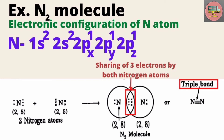Now let's see why the N₂ molecule has a triple bond. The electronic configuration of nitrogen atom is 1s², 2s², 2p³. These 2p³ electrons are distributed as: 2px¹, 2py¹, 2pz¹ — meaning all 3 electrons are distributed equally, one in each 2p orbital. So there are 3 unpaired electrons on each nitrogen atom.